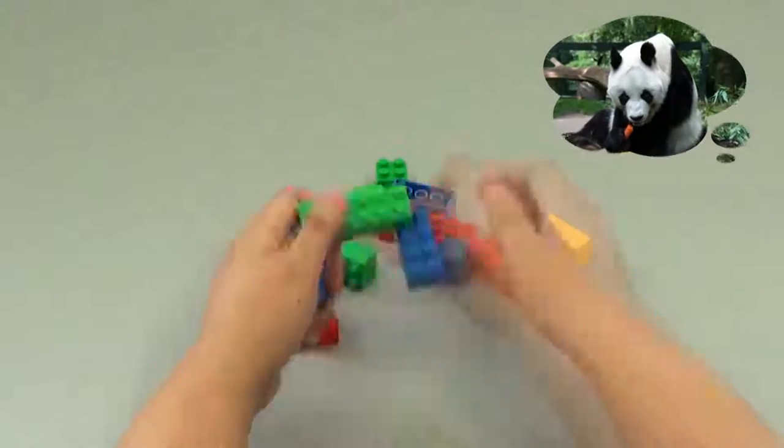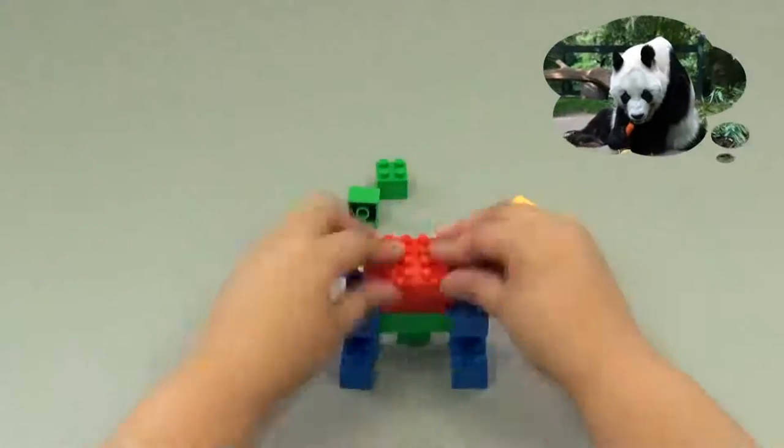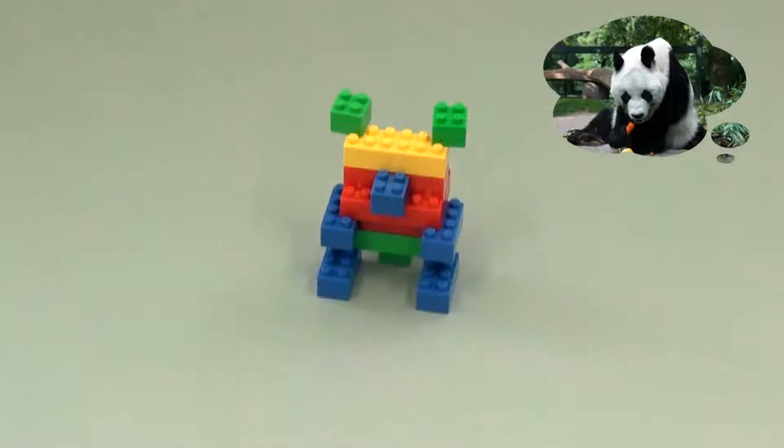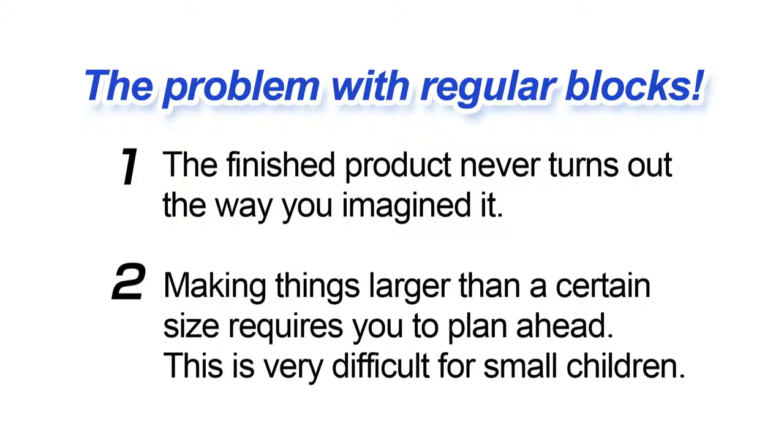The structure of conventional blocks only allows you to stack them on top of one another. As a result, firstly, the finished product never really turns out the way you imagined it. And secondly, making things larger than a certain size requires you to plan ahead, which is very difficult for small children. These are the kinds of problems that plague regular blocks.